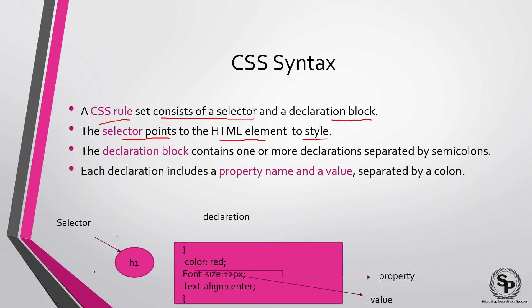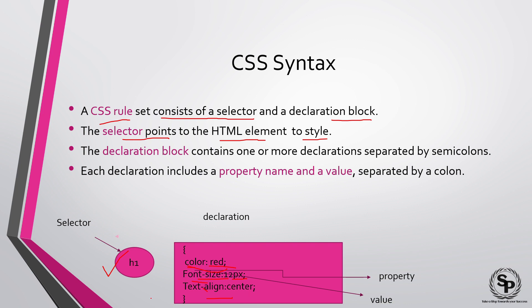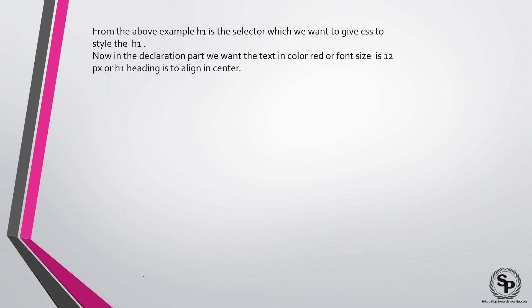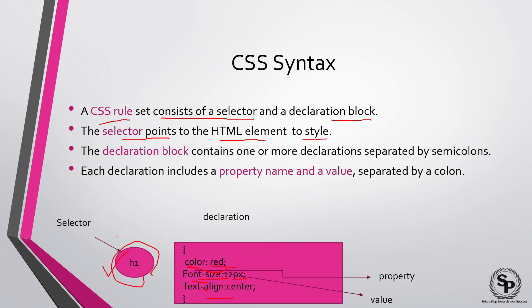For example, suppose I have an HTML element H1 as the selector, and the declaration block contains: color red, font-size 12 pixels, text-align center. Here, color, font-size, and text-align are the properties, and red, 12px, and center are the values. So H1 is the selector — we want to give CSS style to the H1 tag — meaning the H1 text color will be red, font size will be 12 pixels, and the text will be aligned to center.